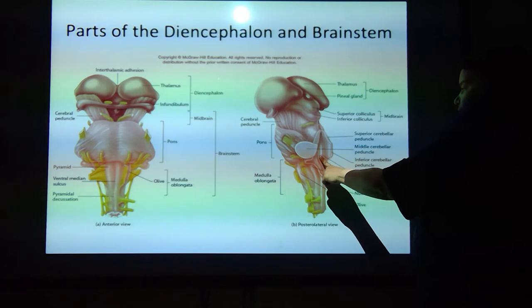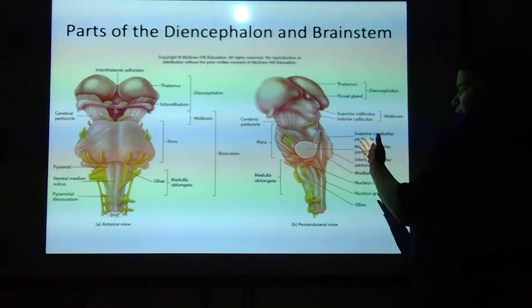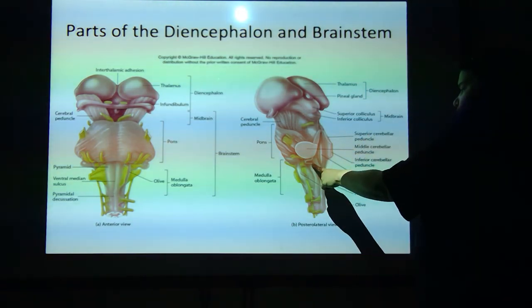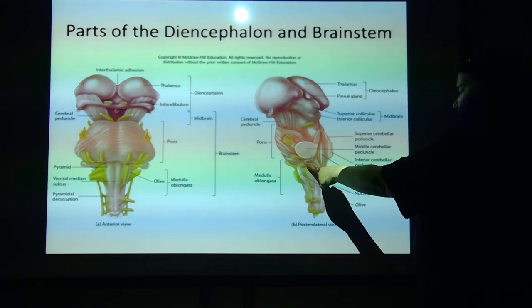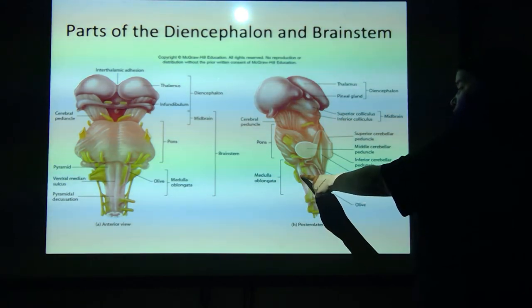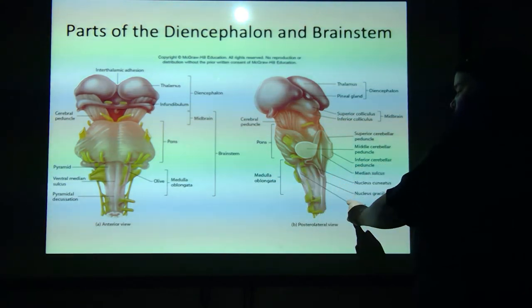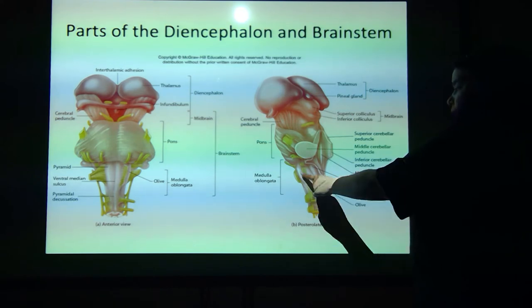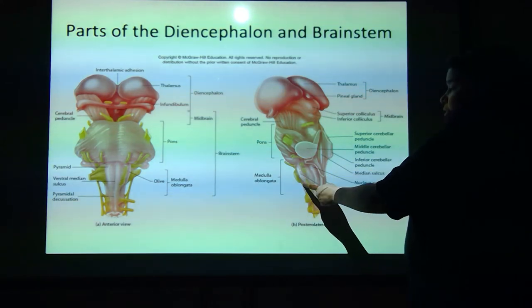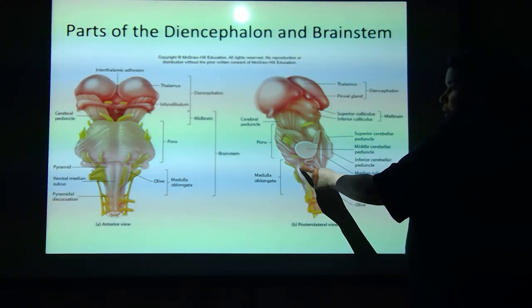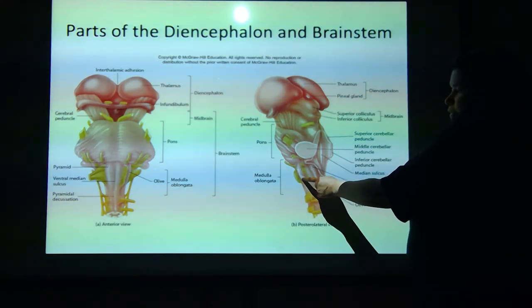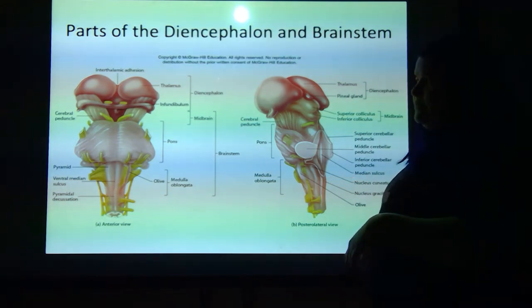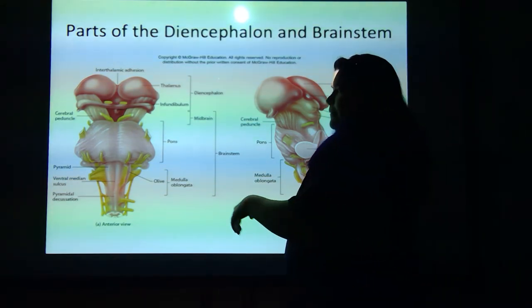You've got the median sulcus — remember, sulcus means groove. The nucleus cuneatus, the nucleus gracilis, and the olive. See that lump right there? That's the olive, in the medulla oblongata.